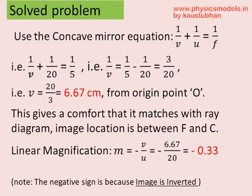The linear magnification is minus V by U, so that comes out as minus 0.33. We can also be happy with this because it shows that the image is smaller than the object. The minus sign is because the image is inverted.